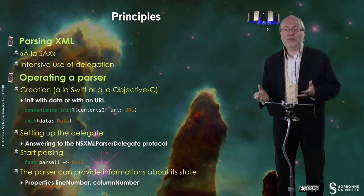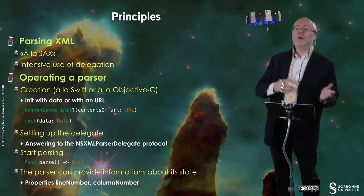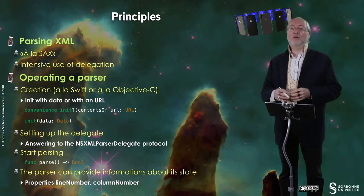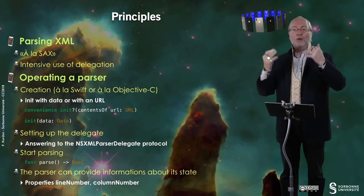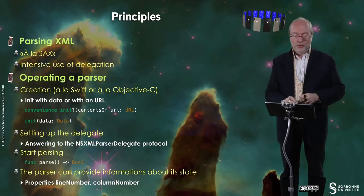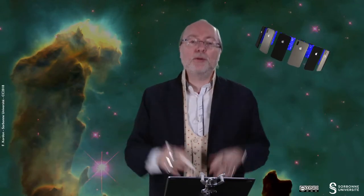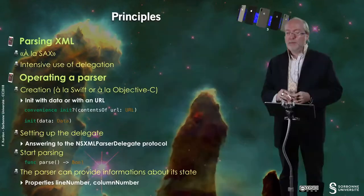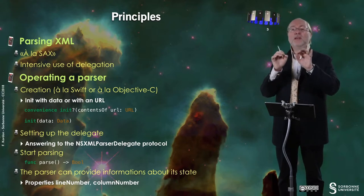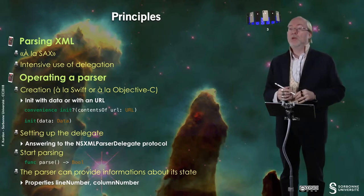So, how do you operate such a parser? First of all, you create it à la Swift or à la Objective-C. Typically, you init it with data or with a URL, so you can have already stored the data or you can directly get it from a URL. Then, you set up the delegate because you will be notified that you are getting into an XML directive each time such a directive goes through.